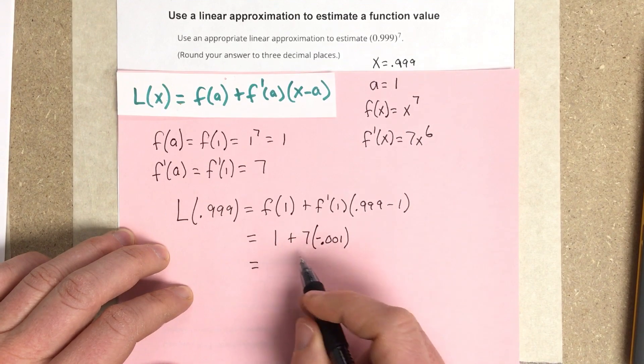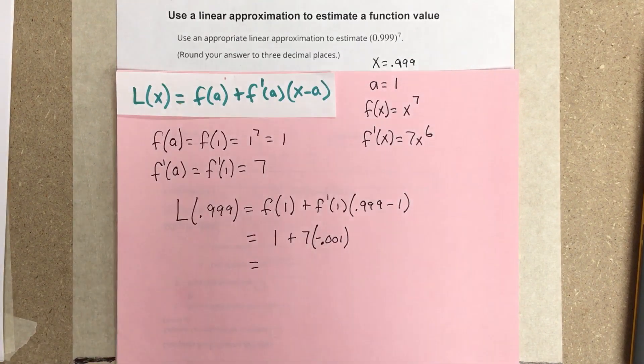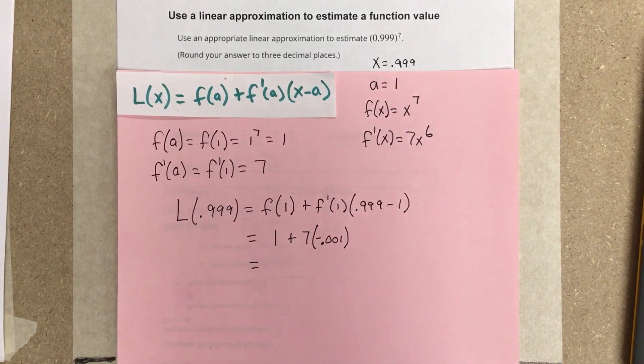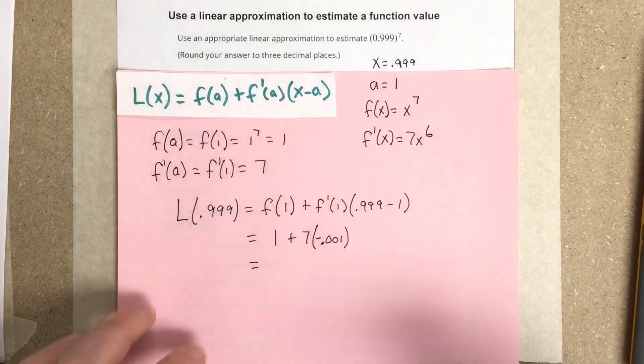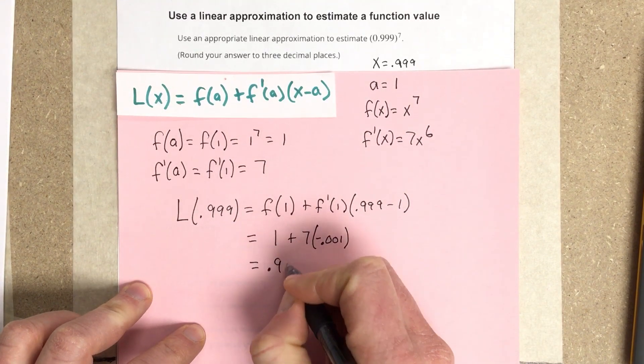Now I'm going to multiply this and combine this together. 7 times that negative 0.001 value plus 1 gives us 0.993.